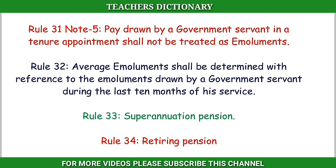Rule 31, Note 5: Pay drawn by a government servant in a tenure appointment shall not be treated as emoluments. Rule 32: Average emoluments shall be determined with reference to the emoluments drawn by a government servant during the last 10 months of service.